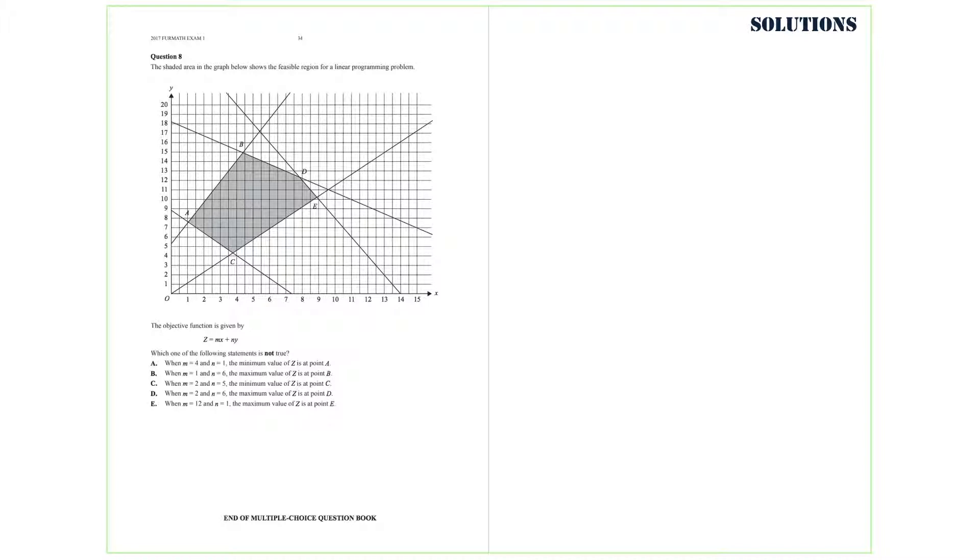Question 8. The shaded area in the graph below shows the feasible region for a linear programming problem. The objective function is given by Z equals MX plus NY. The question is asking to choose the statement that is not true. We are going to use the sliding line technique here.